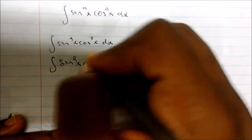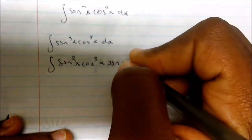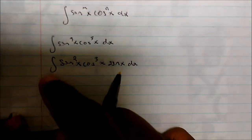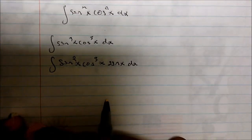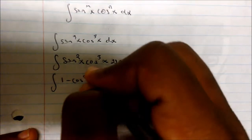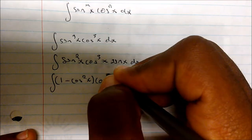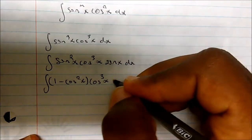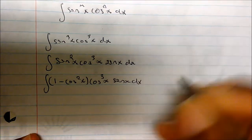So for the integral of sine cubed of x times cosine cubed of x dx, I could rewrite this as sine squared of x times cosine cubed of x times sine of x dx — all I did was borrow one from sine. And using my identity, I know sine squared of x equals 1 minus cosine squared of x, multiplied by cosine cubed of x times sine of x dx.